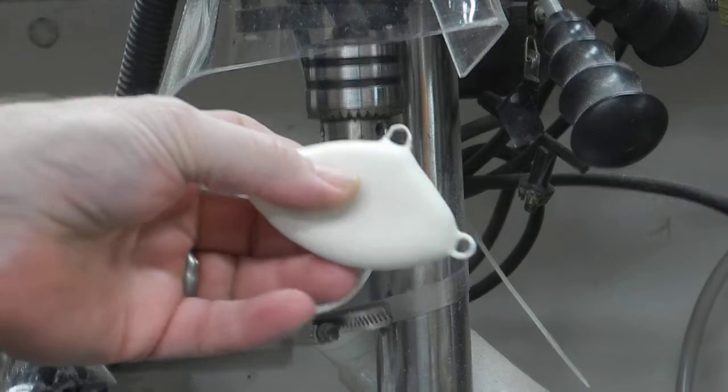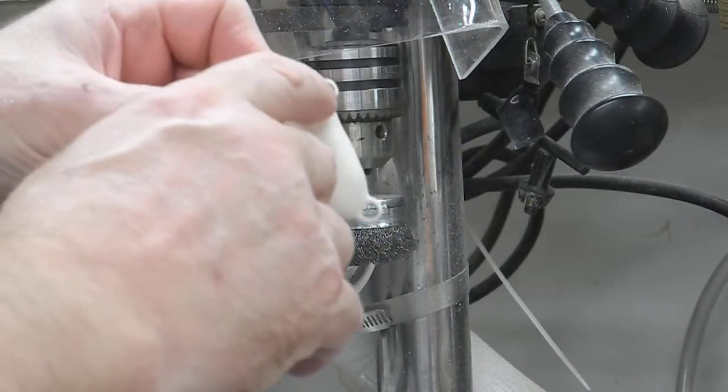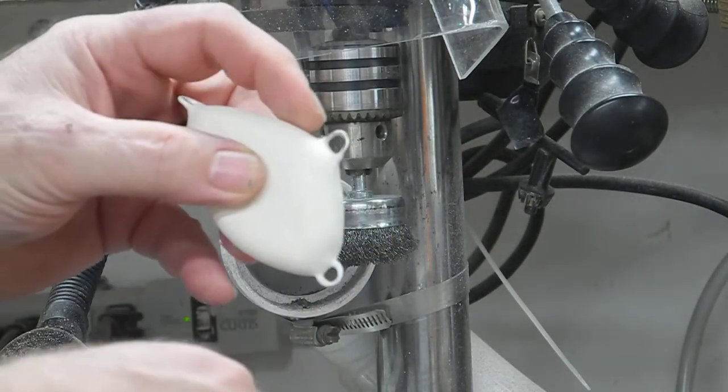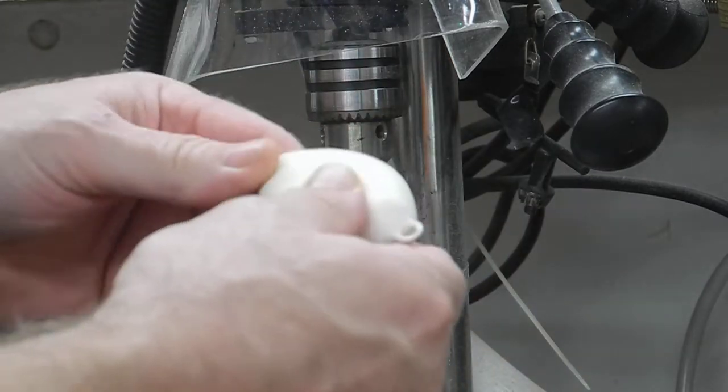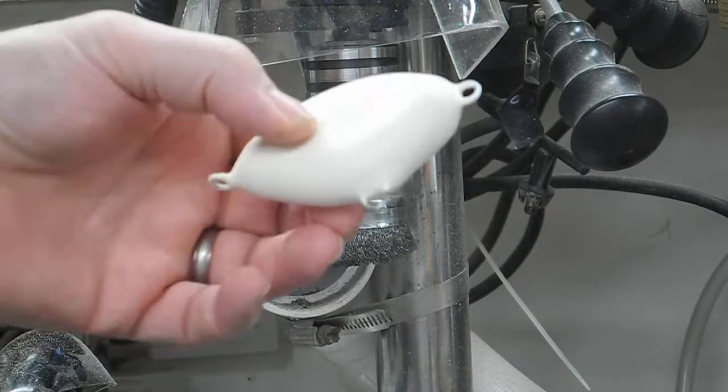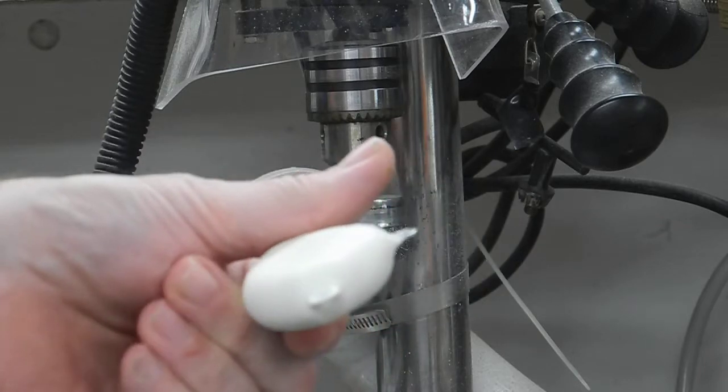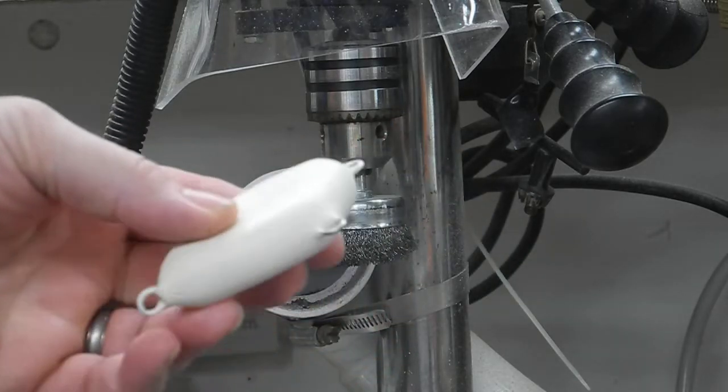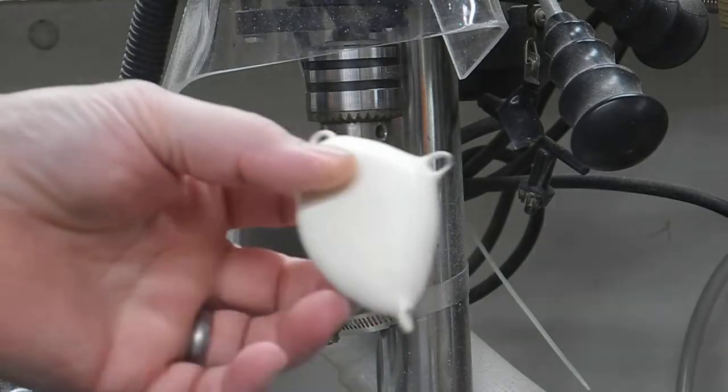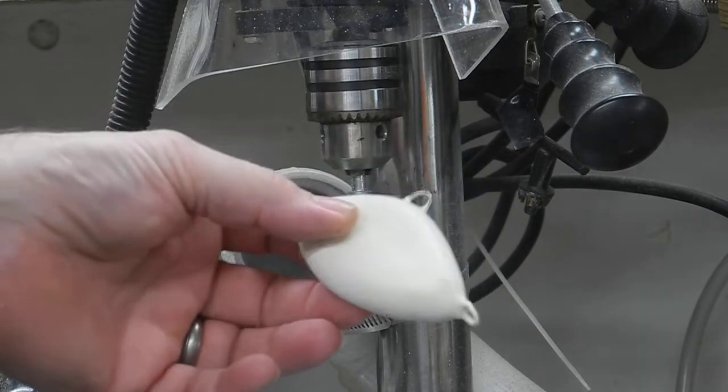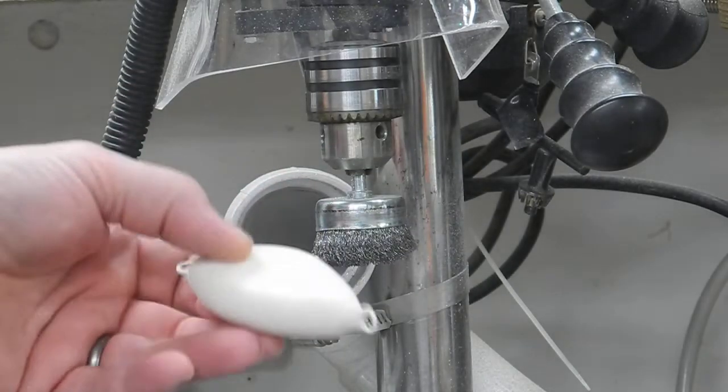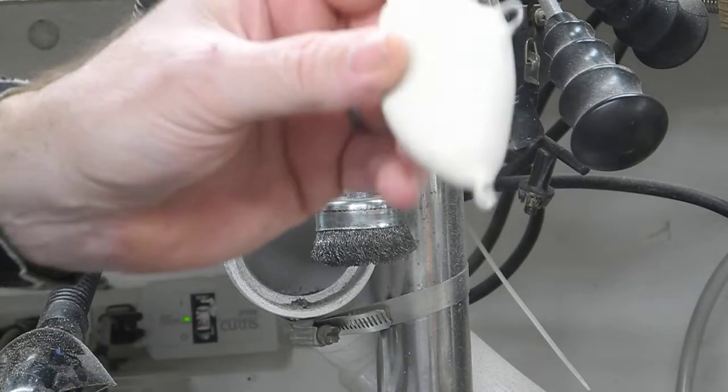We only need to have this part clean here so the ring won't chip it off. This is just something to speed up the process when you're making 50 lures at a time. It only takes me about 30 seconds to do one plug. Thanks for watching.